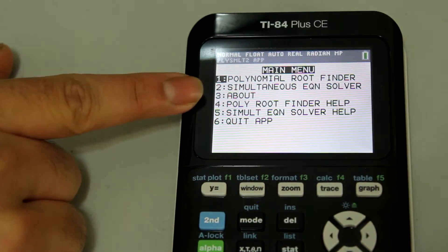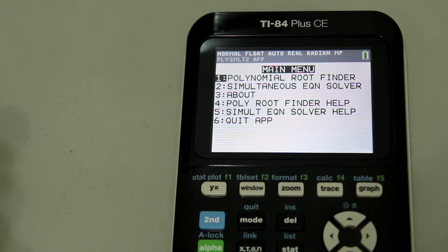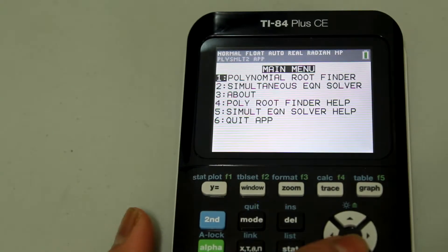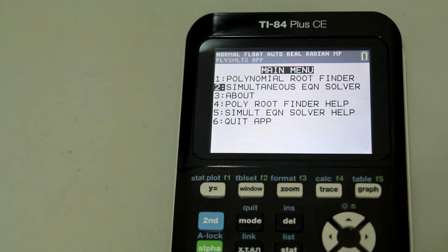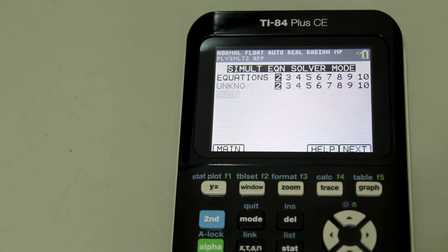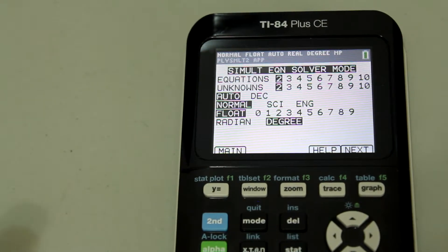And now you want to select the second option that says simultaneous equation solver. You can either arrow down or just hit the number 2 button and enter. And now it takes us to this screen.